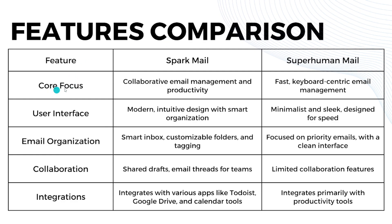When we talk about their core focus, Sparkmail focuses on collaborative email management and productivity, while Superhuman Email focuses on fast keyboard-centric email management. For user interface, Sparkmail has a modern and intuitive design with smart organization, while Superhuman Email is minimalist and slick, designed for speed.